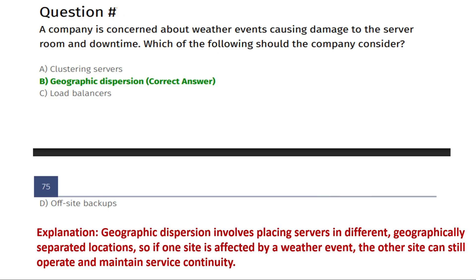Next question: a company is concerned about weather events causing damage to the server room and downtime. Which of the following should the company consider? Option A: clustering servers. Option B: geographic dispersion. Option C: load balancers. Option D: offsite backups.